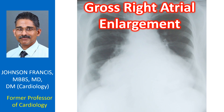X-ray shows gross enlargement of the cardiac silhouette. The right heart border extends far to the right, indicating gross right atrial enlargement. Presence of an associated pericardial effusion cannot be ruled out.